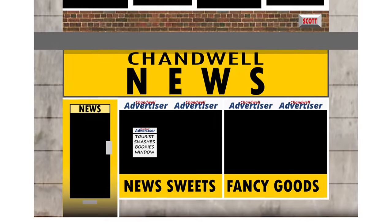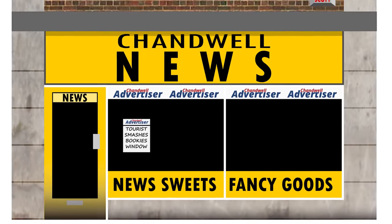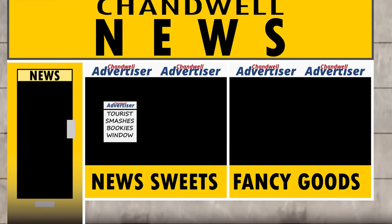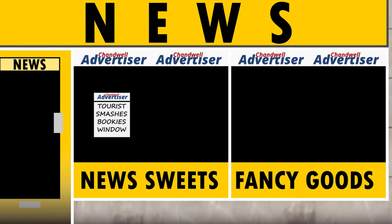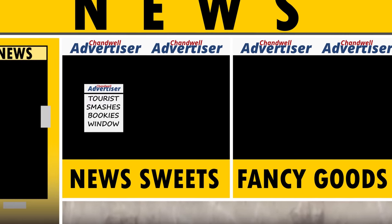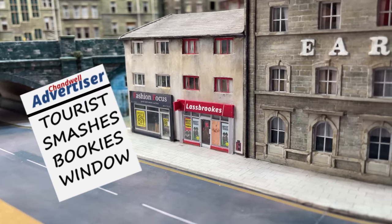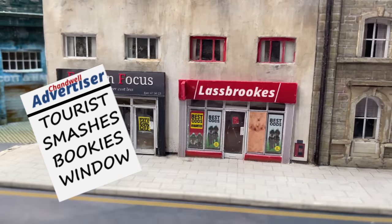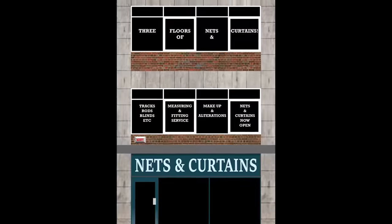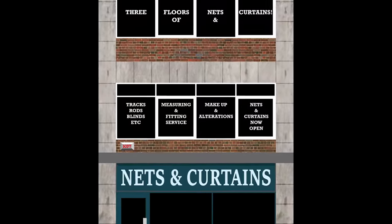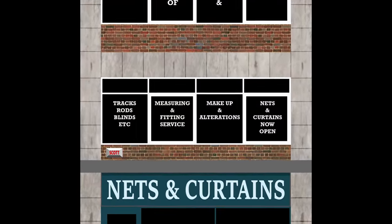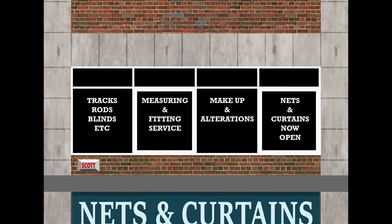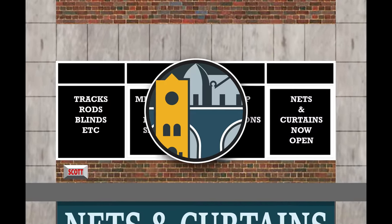Although almost invisible on the final model, I took time to give the often mentioned Chandwell Advertiser a logo. And front page news is the smashed window in the bookies. I've not tried to represent lettering on glass before, but thought I'd give it a try on the photo shop and the curtain shop.